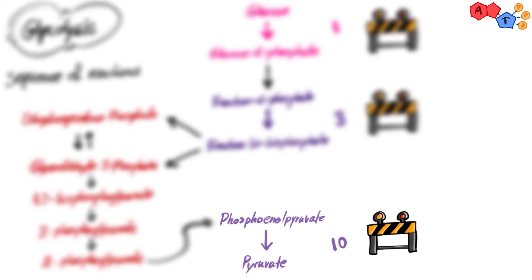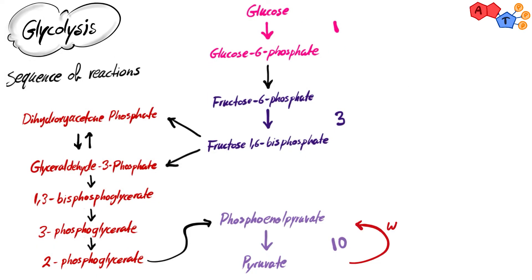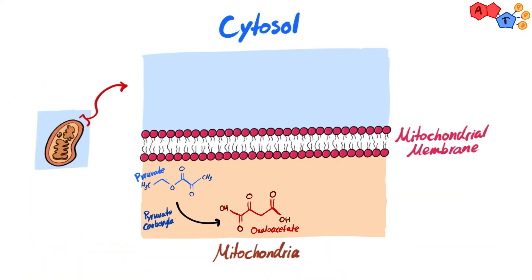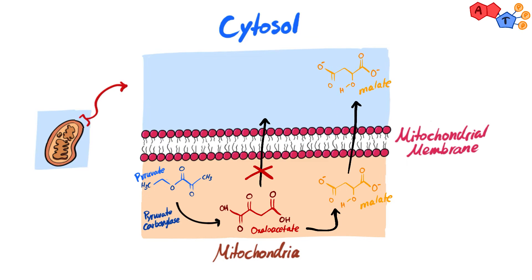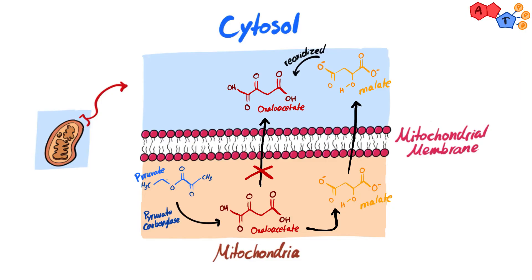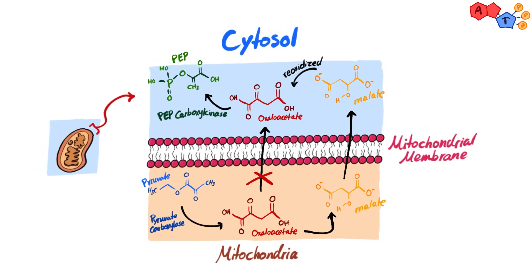The first roadblock is the irreversible conversion of phosphoenolpyruvate to pyruvate by pyruvate kinase. To yield PEP from pyruvate in gluconeogenesis, we need two enzymes: pyruvate carboxylase and PEP carboxykinase. Pyruvate carboxylase carboxylates pyruvate in the mitochondria to form oxaloacetate. Oxaloacetate, a TCA cycle intermediate, cannot pass through the mitochondrial membrane, so it is reduced to malate, which leaves via the malate shuttle and enters the cytoplasm where it is reoxidized back to oxaloacetate. Oxaloacetate is then decarboxylated and phosphorylated by PEP carboxykinase to form PEP.